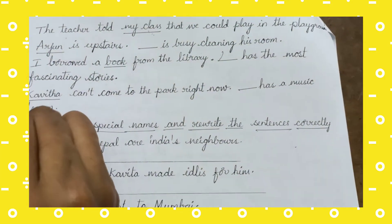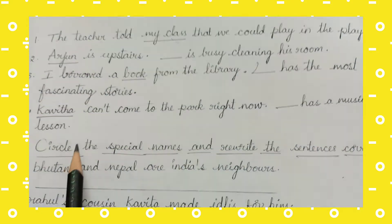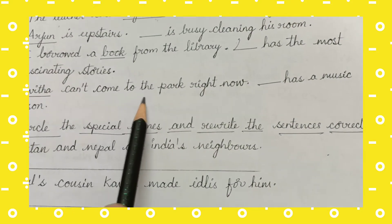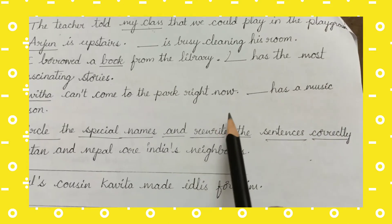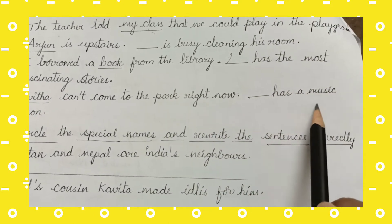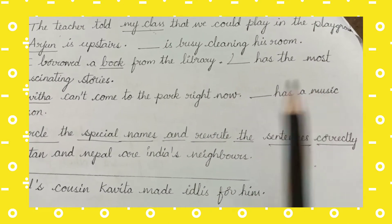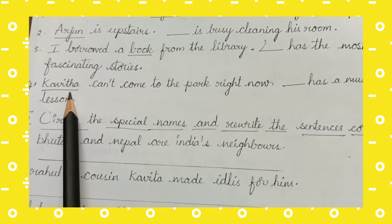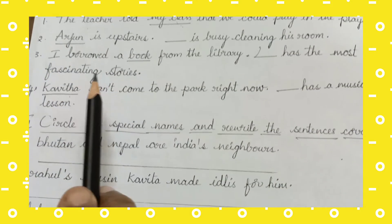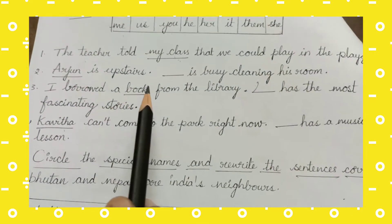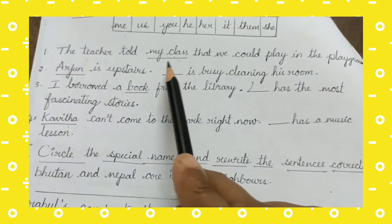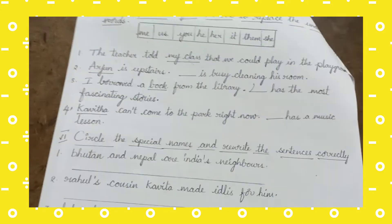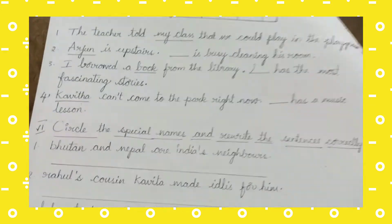Fourth sentence: 'Kavita can't come to the park right now. Dash has a music lesson.' The underlined word is 'Kavita'. You have to choose which pronoun suits the underlined word and write it in the given blank.